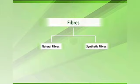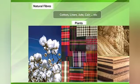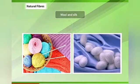Synthetic fibers are also known as human made fibers. The fibers which are obtained from plants or animals are called natural fibers. Some natural fibers are obtained from plants like cotton, linen, jute, and coir. We get natural fibers from animals also, like wool from sheep and yak, and we get silk from silkworms.